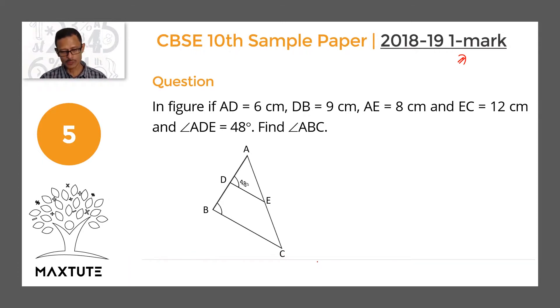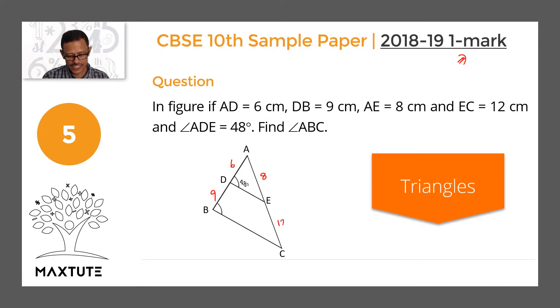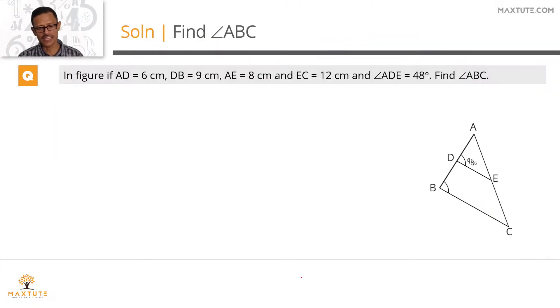Question number 5 is from the topic triangles, an easy question. Let's quickly run through it. In the figure, if AD equals 6 centimeters, the measure of DB equals 9, measure of AE equals 8 and the measure of EC equals 12 and angle ADE measures 48 degrees. We need to find out the measure of angle ABC.